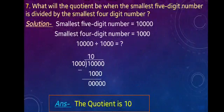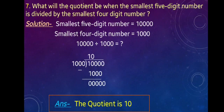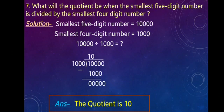Question number 7: What will the quotient be when the smallest five-digit number is divided by the smallest four-digit number? The smallest five-digit number is 10000 and the smallest four-digit number is 1000. 10000 divided by 1000: we write 1 at the quotient place, 1000 minus 1000 is 0, bring down 0 and write 0 at the quotient place. After division, the quotient is 10.